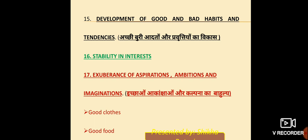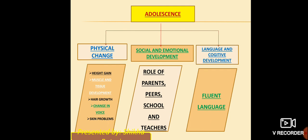In this stage, the adolescent's ruchiyan — interests — also become stable. They know what they like: dancing, music, or other interests. Next is icchaon, akankshaaon aur kalpana ka bahulya — abundance of desires, aspirations, and imagination. Because it is a stormy phase, every expression is at a high level. Their aspirations, ambitions, and imagination are all at a high level — they want good food, good clothes, branded things. These are the characteristics of adolescence.